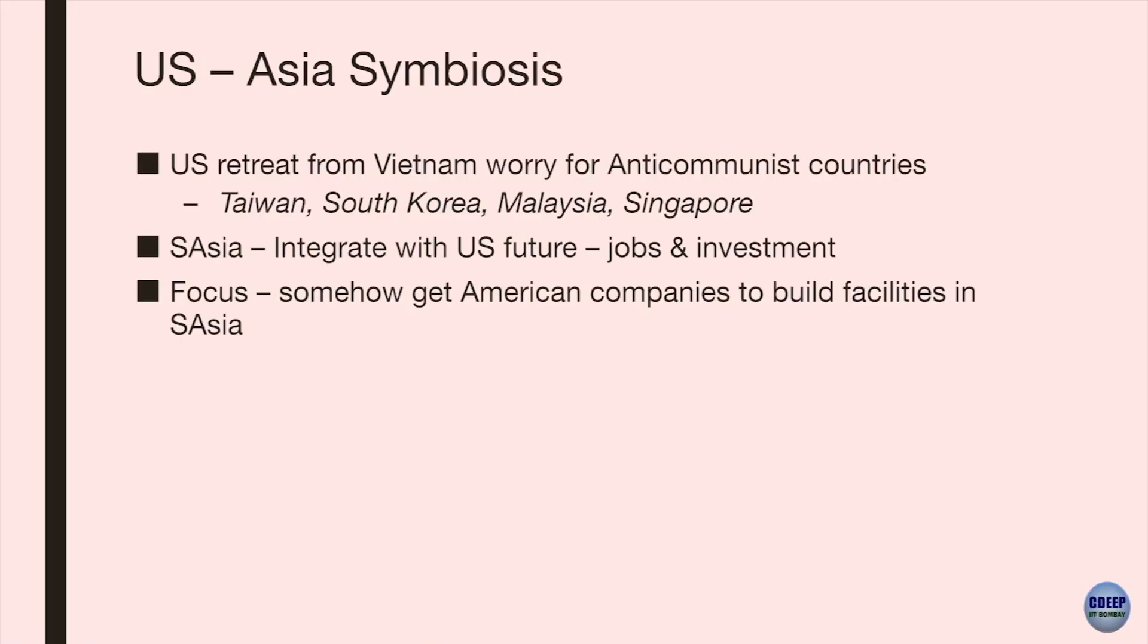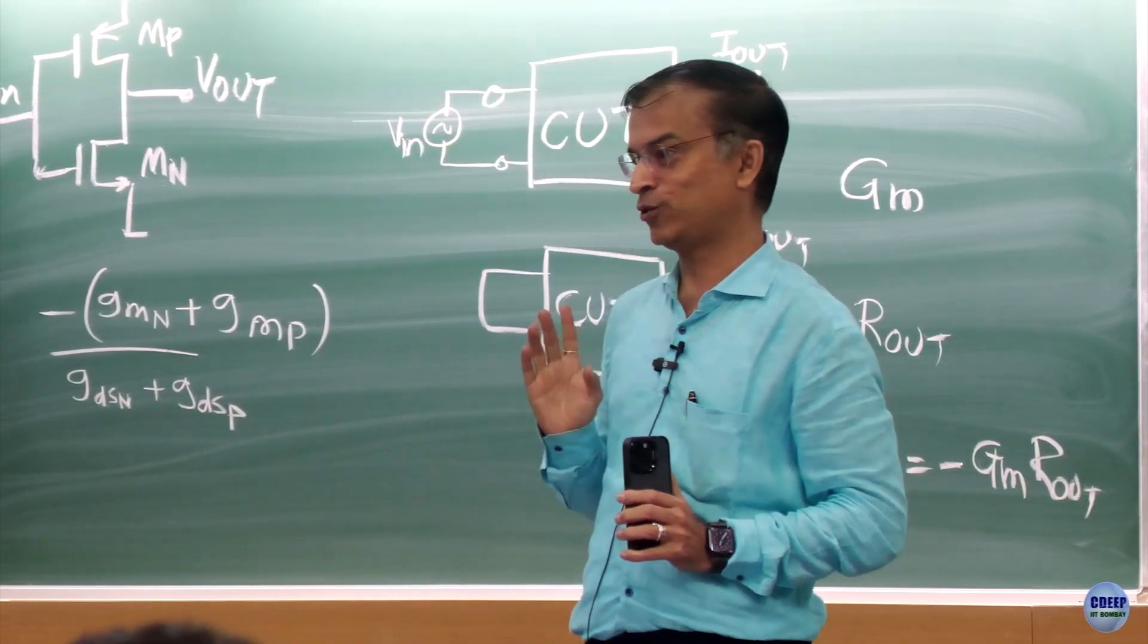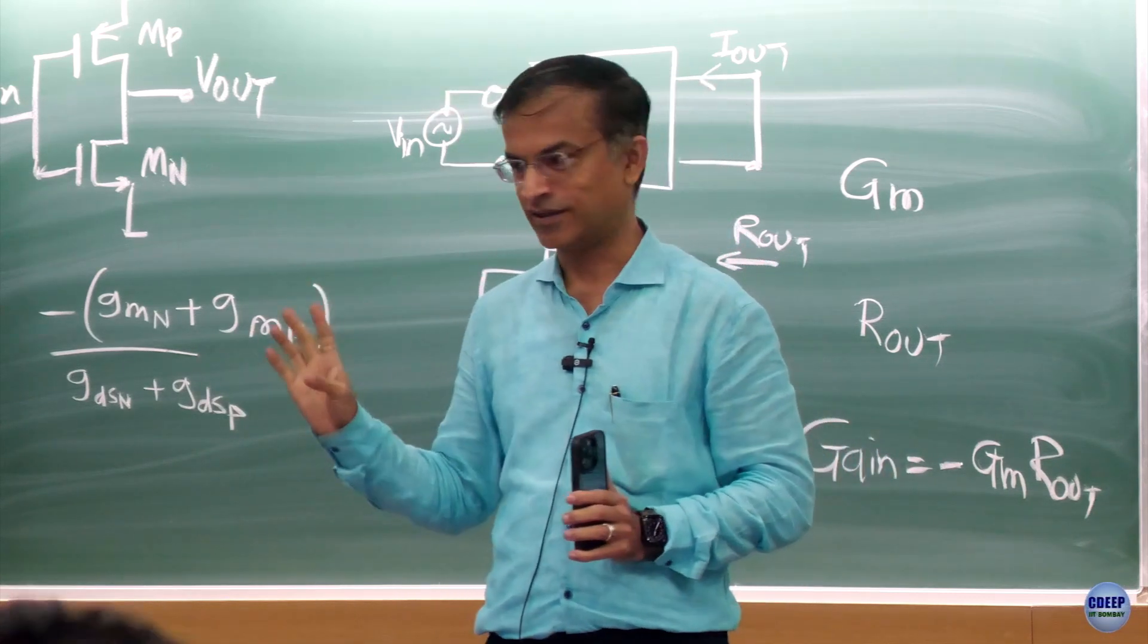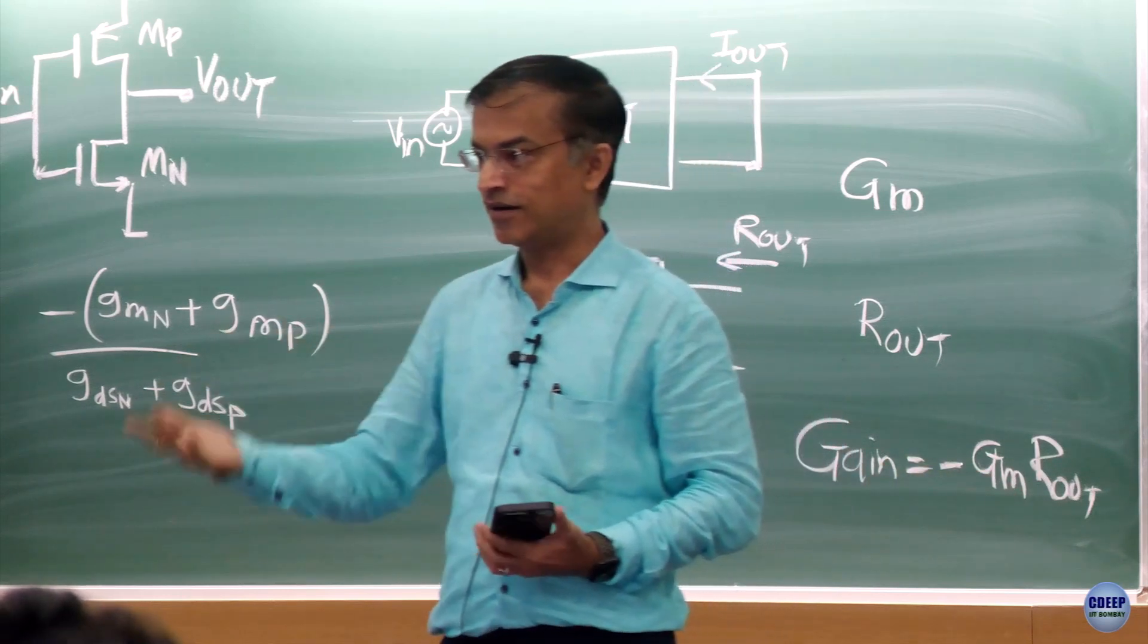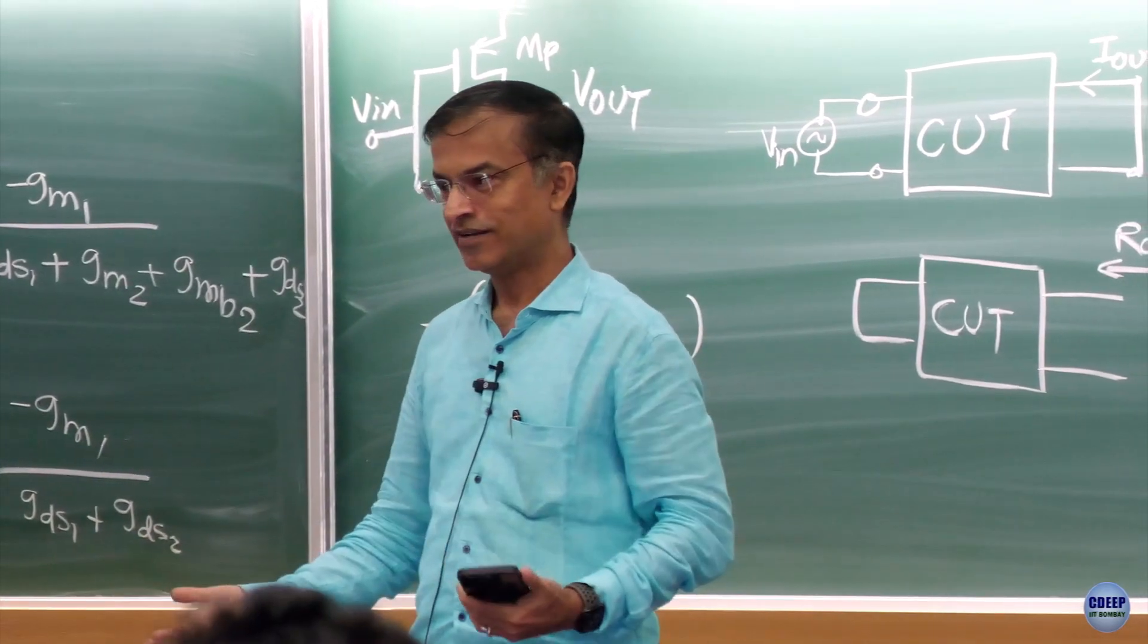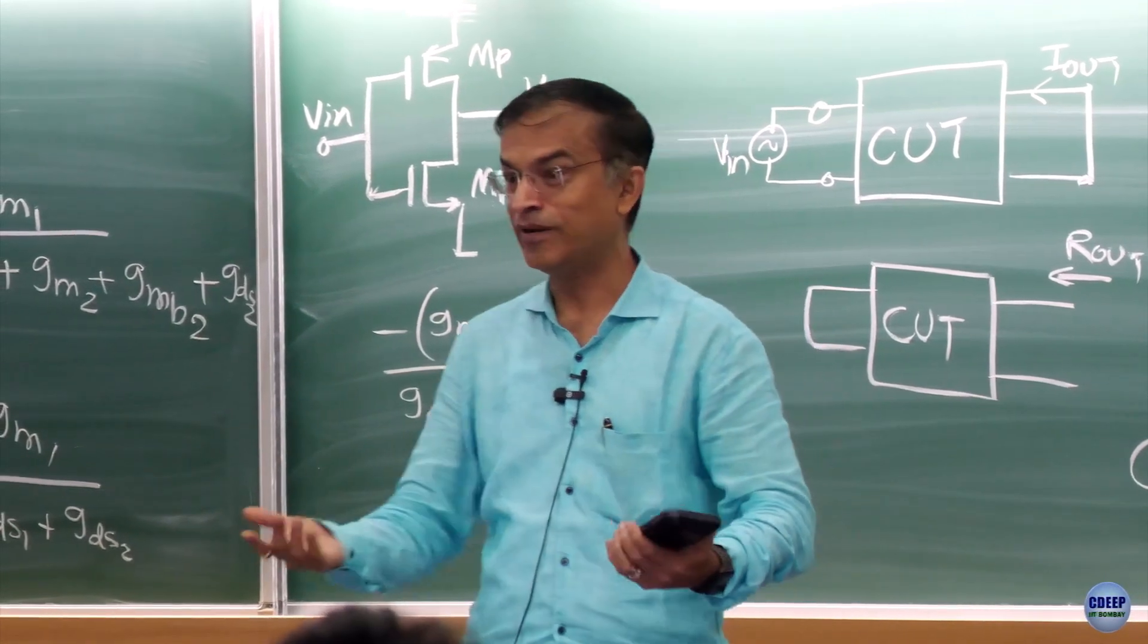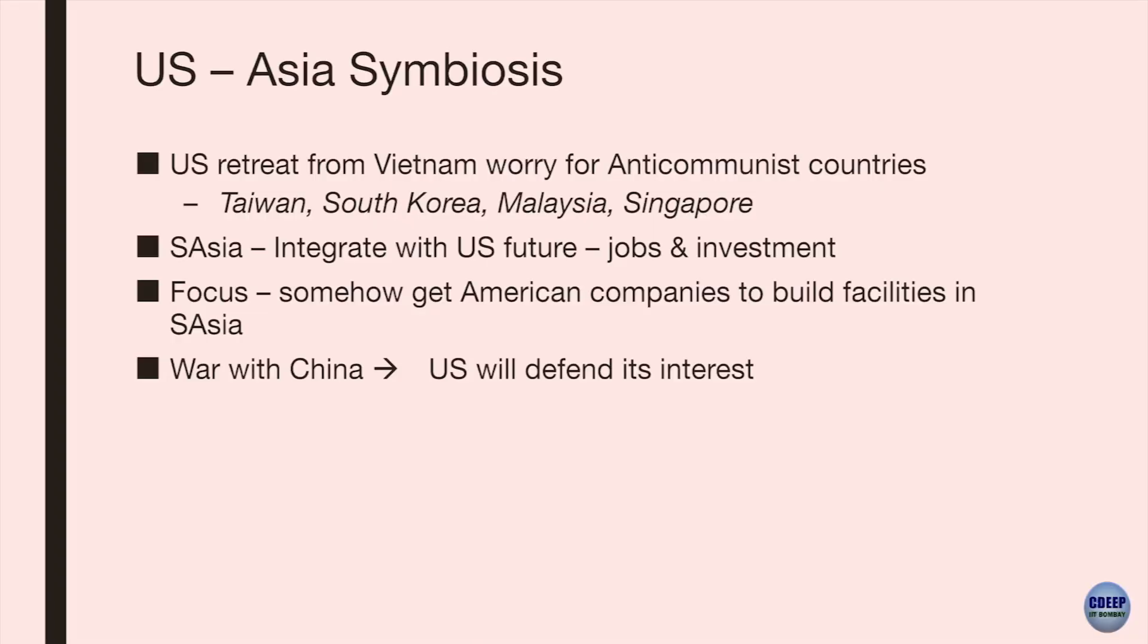So the countries were welcoming United States to put their factories there with the understanding that if something happens to us, you better get involved. If China does something or some other country does something, then you will be protecting us. And which is exactly what is going on right now. I don't know if you have observed the news lately, last year, what was going on with Taiwan. Same thing. Taiwan is saying, you protect us. If you don't protect us. Everyone has, I like to call it skin in the game. That's kind of thing. So basically, that's what they were thinking.